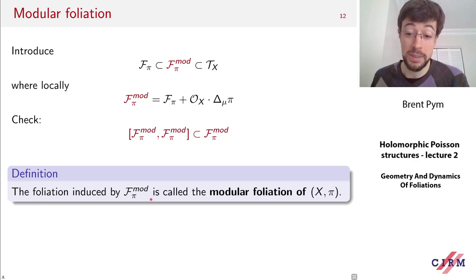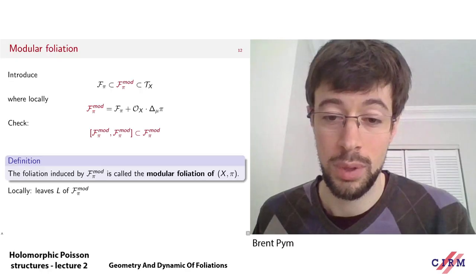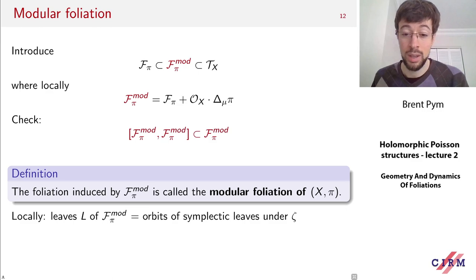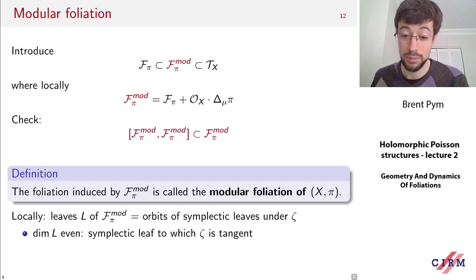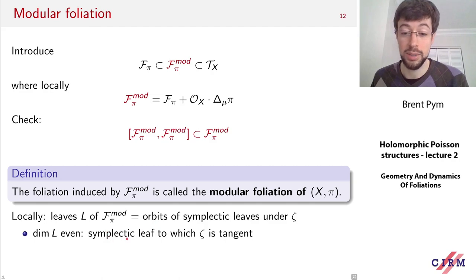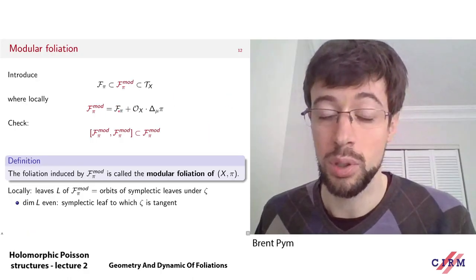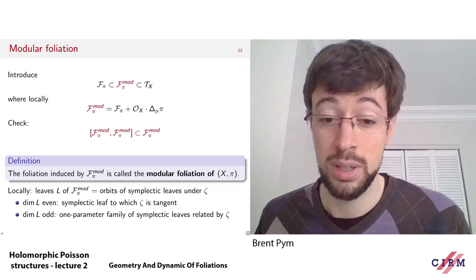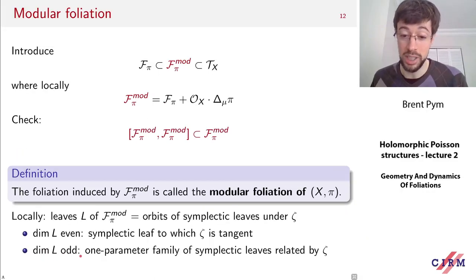What is the meaning of the leaves of the modular foliation? Locally the leaves come in two flavors. They're given by orbits of symplectic leaves under the modular vector field zeta, but in two types. If the dimension of the leaf is even, the modular vector field is tangent to that symplectic leaf, meaning this extra generator already lies in F_pi and adds nothing new. The opposite situation is when the vector field is transverse to the symplectic leaves, giving an odd-dimensional modular leaf corresponding to a one-parameter family of symplectic leaves related by zeta.